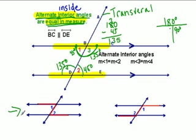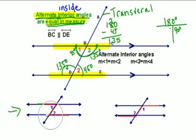Looking at our diagrams, if you draw a Z on the parallel lines, the angles on the inside by the points of the Z are the same. If you draw a regular Z or a backwards Z, the angles at the points are equal. That is another easy way to remember which angles are the same.